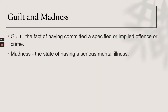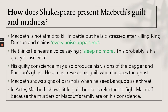Guilt is the fact of having committed a specified offense or crime; madness is the state of having a serious mental illness. Shakespeare presents Macbeth's guilt and madness: Macbeth is not afraid to kill in battle, but he is distressed after killing King Duncan and claims 'every noise appalls me.' He thinks he hears a voice saying 'sleep no more' — probably his guilty conscience. His guilty conscience may also produce visions of the dagger and Banquo's ghost. He almost reveals his guilt when he sees the ghost, and shows signs of paranoia. In Act Five, Macbeth shows little guilt but is reluctant to fight Macduff because the murders of Macduff's family weigh on his conscience.